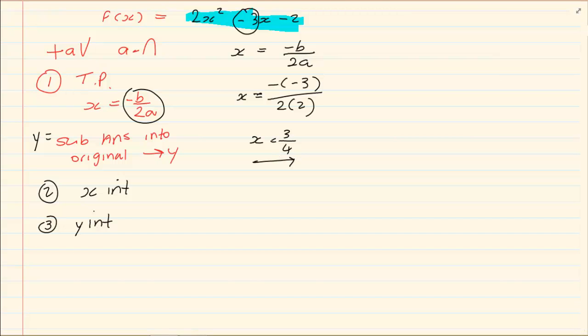That is my x value. How do I get my y value? You get your y value by taking your x and substituting it. So we have y equals 2 into 3 over 4 all squared minus 3 into 3 over 4 minus 2, which equals minus 3 and 1 over 8.